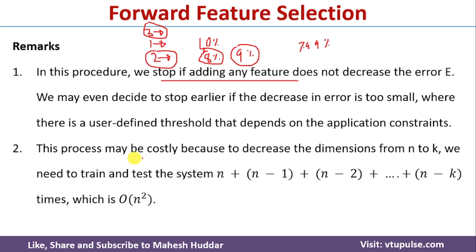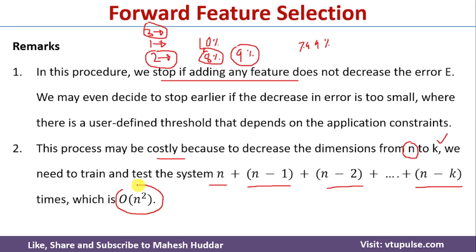The second key point is that forward feature selection is computationally costly, because we need to reduce the number of features from N to k to get better accuracy. In the first iteration we consider all N features, in the second iteration N minus 1, in the third N minus 2, and so on. The complexity of this process is O(N²), so it can take a lot of time to find the best subset.